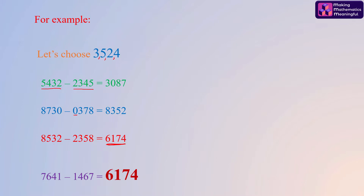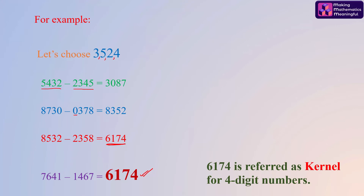In fact, if you now consider the largest and the smallest number from 6174, it will again give us 6174 only. 6174 is referred to as the kernel for four-digit numbers.